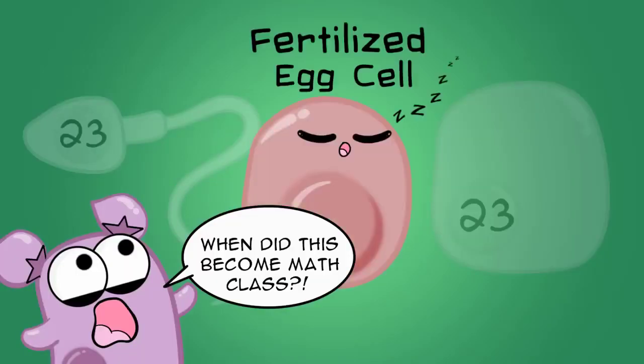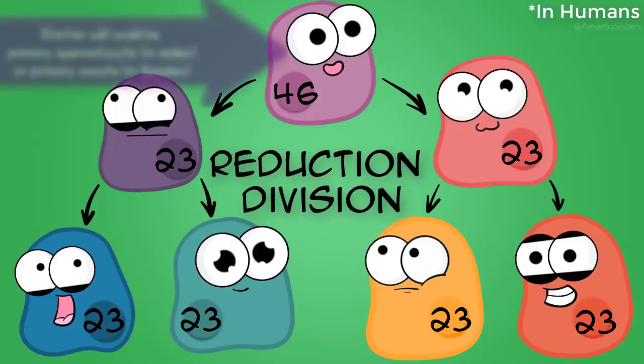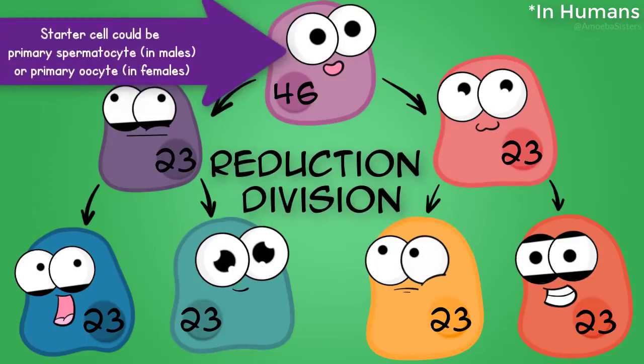That will allow a newly formed fertilized egg to develop into a human. Meiosis is what we call a reduction division because you have a starting cell that has 46 chromosomes, and your ending cells, the sperm and egg cells, have only 23 chromosomes.